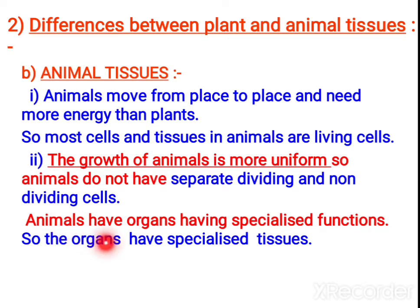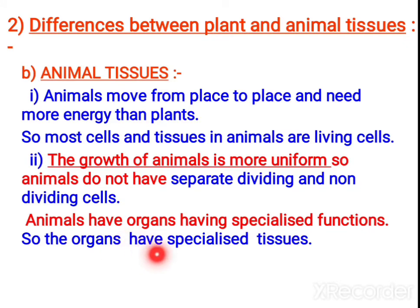In animals we have special organs and they have specialized functions also. That is why we have more specialized tissues comparing to plants. Animals are highly evolved organisms, so they show more specialized tissue compared to plants.